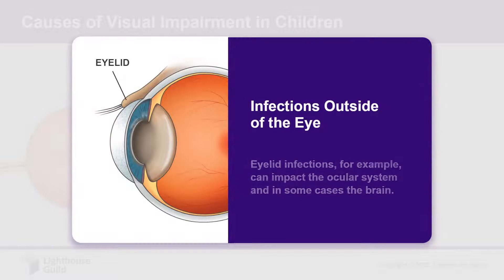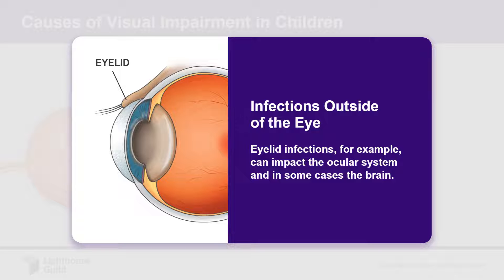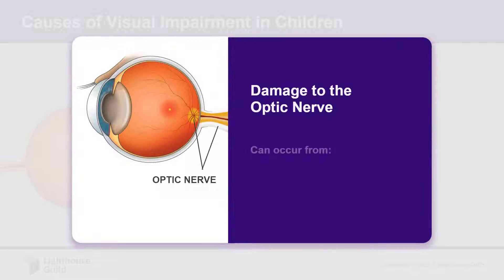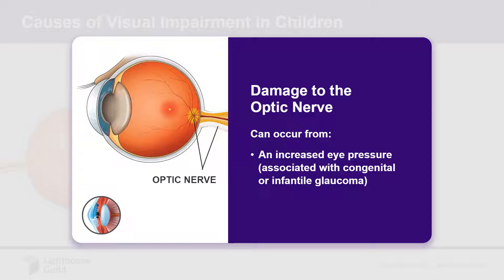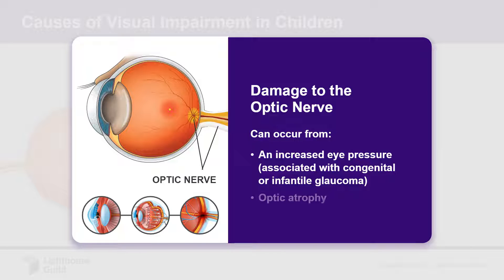Infections outside of the eye, such as on the eyelid, can impact the ocular system, and in some cases, the brain. Damage to the optic nerve can occur from an increased eye pressure associated with congenital or infantile glaucoma that results from poor development of the eye's drainage system before birth, or from optic atrophy, which is a deterioration of the nerve fibers in the optic nerve.